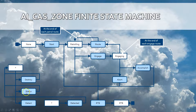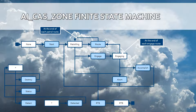Also during patrolling, the AI's status is monitored — whether it has enough fuel, whether it is not damaged — and when certain thresholds are reached, the AI is commanded to return back to base.